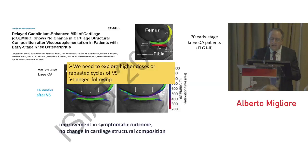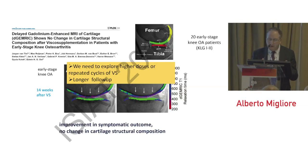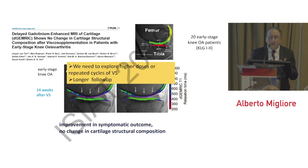Regarding evidence in humans, there is a study using MRI in the early stage of the knee at 14 weeks after viscosupplementation, showing improvement in symptomatic outcome but no change in cartilage structural composition as seen on before-and-after MRI. So MRI was not able to show any kind of structural improvement.